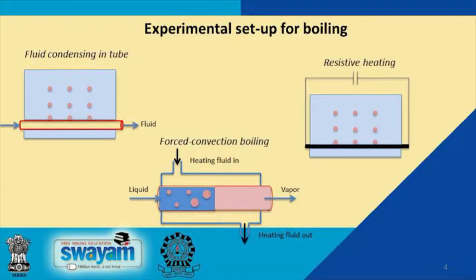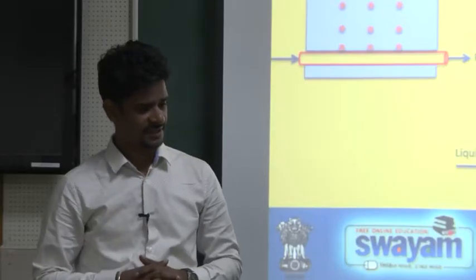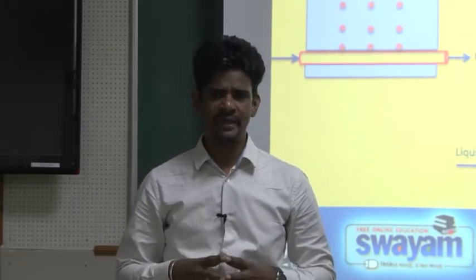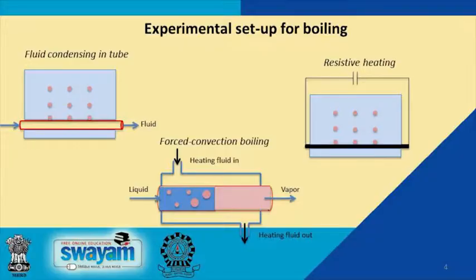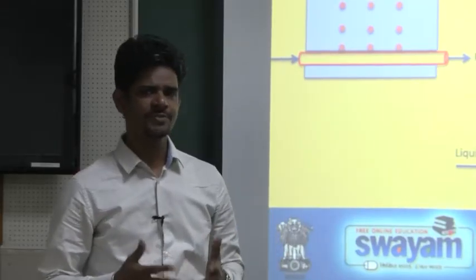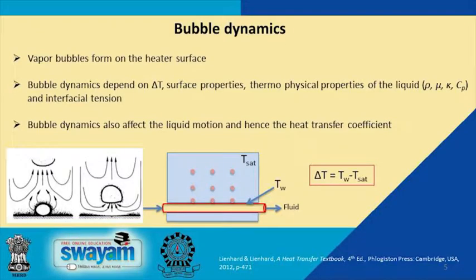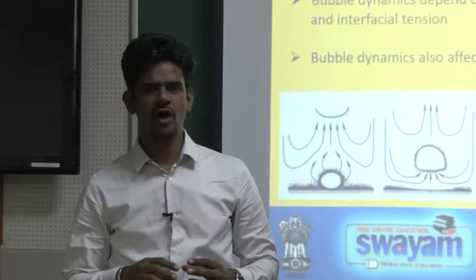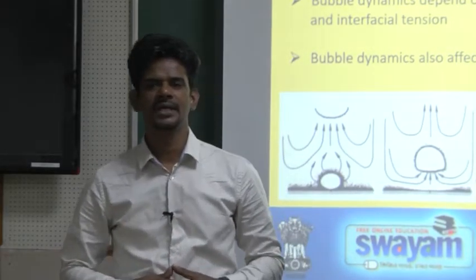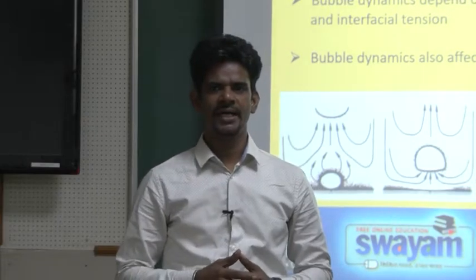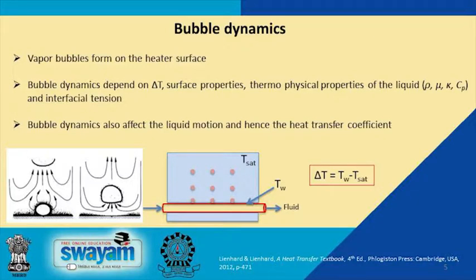Alternatively, you could have a cylindrical tube within which you send a condensing steam or flue gas to increase the surface temperature of the tube, which is exposed to a boiling liquid. The other possibility is to send the liquid you want to boil through a cylindrical tube which is externally heated by another fluid — the liquid enters on one side and leaves as vapor on the other side.